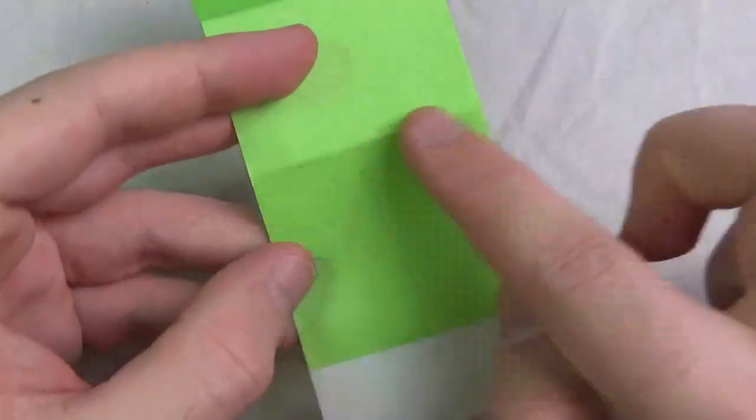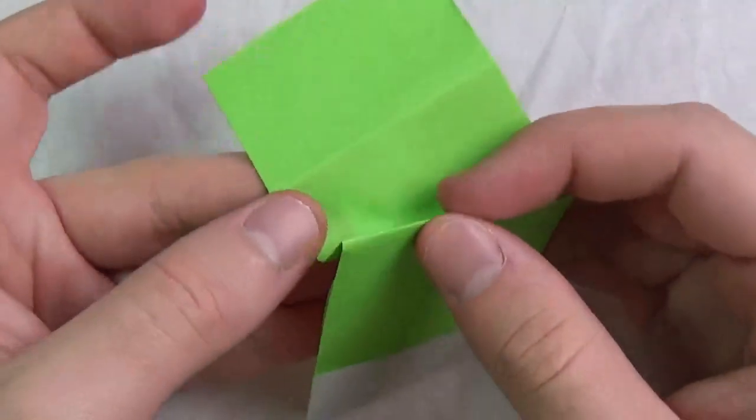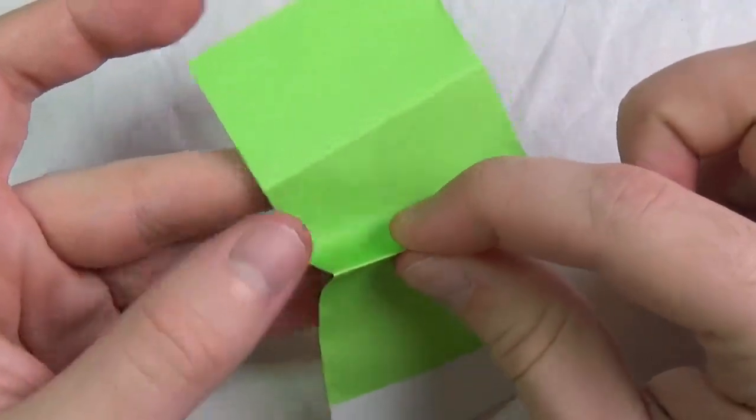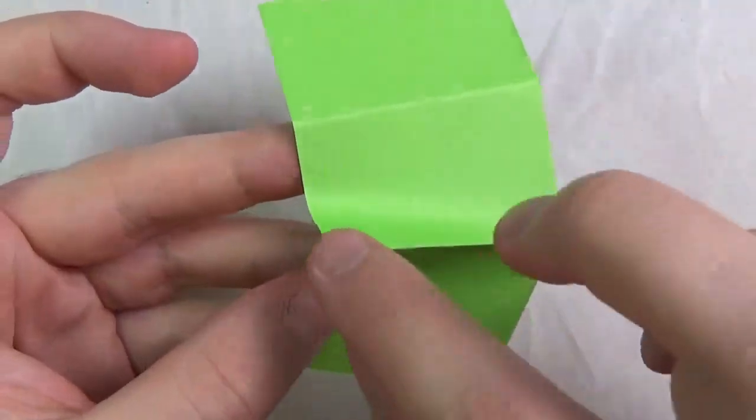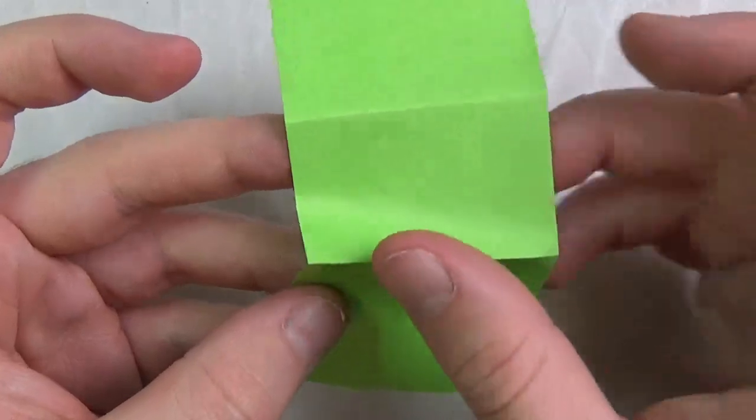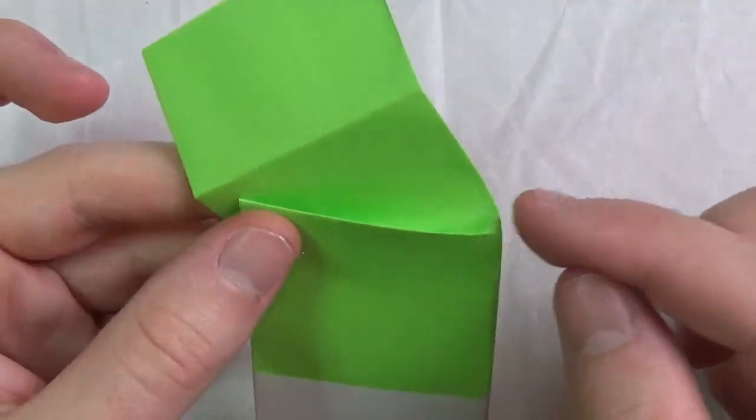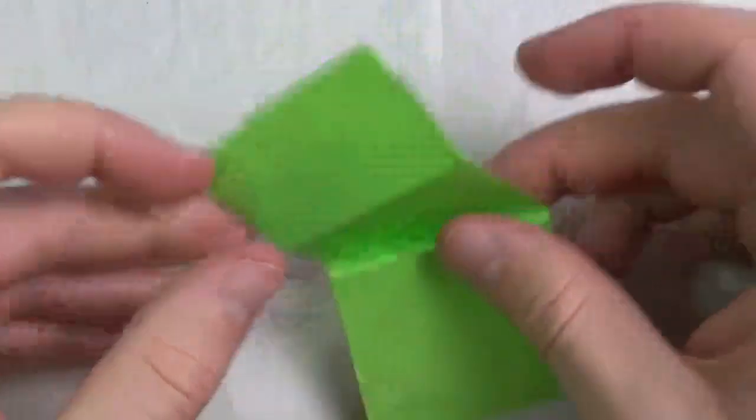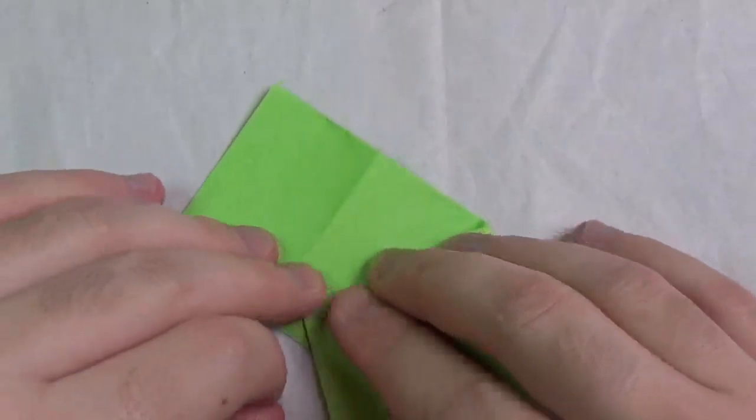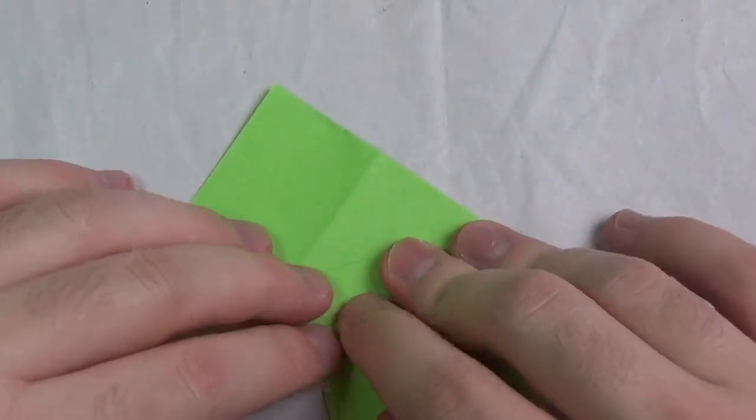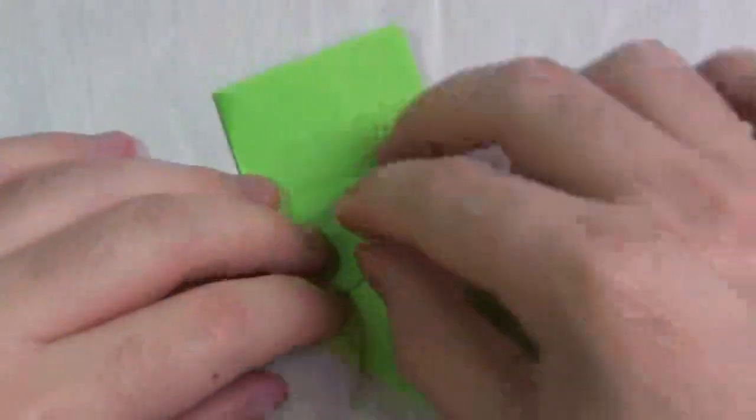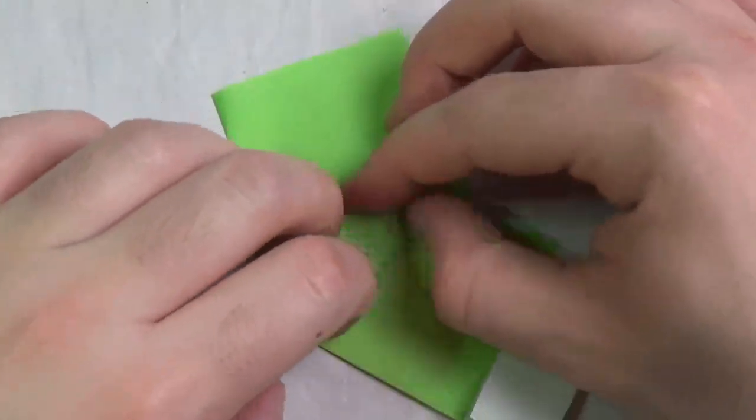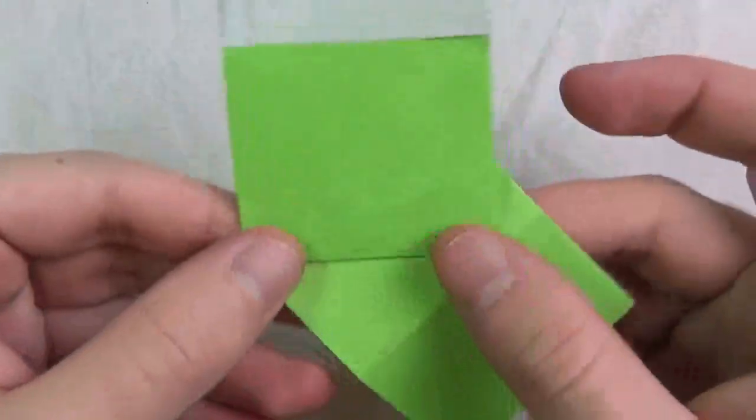And now here is the middle crease. And now we're going to pinch it and we're going to pivot it up so that this point touches this fold. And we're going to anchor the fold at this point right here, like this. And once you got it crease it nice and sharp. Like that.